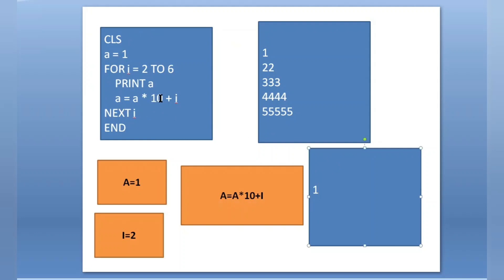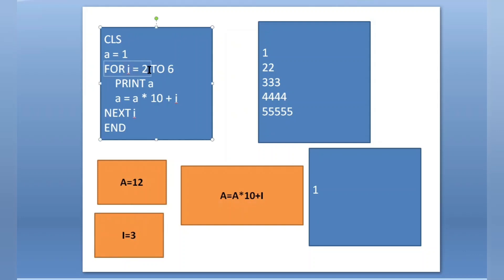After printing, a = a * 10 + i. The value of a is 1, so 1 * 10 + i. The value of i is 2, so 1 * 10 + 2 = 12. We got the value 12 in a. Next i — the value of i is incremented by 1 from 2 to 3. It goes back to the for loop and checks the condition: is i = 3 in the range 2 to 6? Yes, condition is true, so it prints a again. The value of a is now 12, so 12 will be printed.